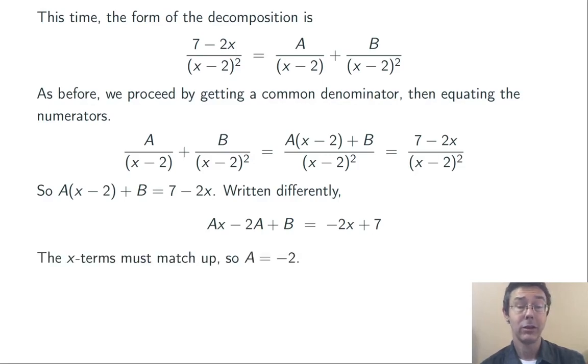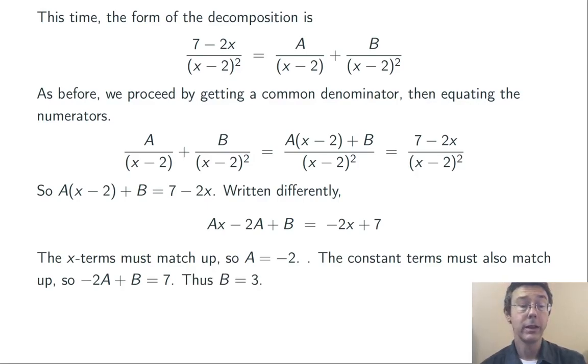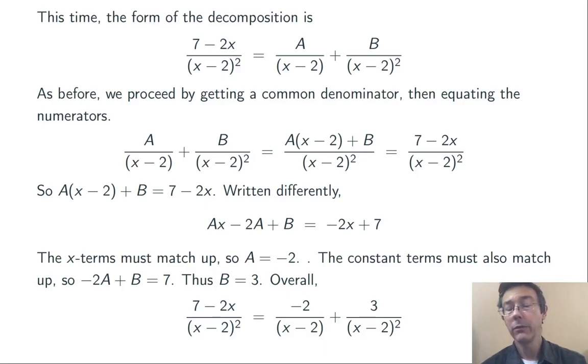The x terms have to match up, so Ax = -2x, so A is -2, and the constant terms have to match up, so -2A + B = 7. Plugging in A = -2 there, I very quickly get B = 3. So (7 - 2x)/(x - 2)² is -2/(x - 2) + 3/(x - 2)².